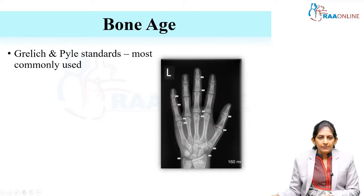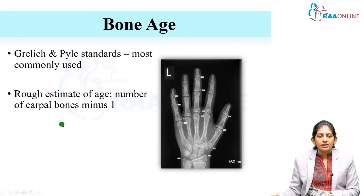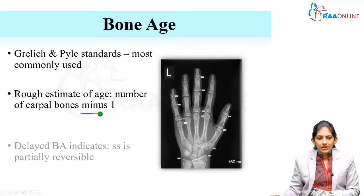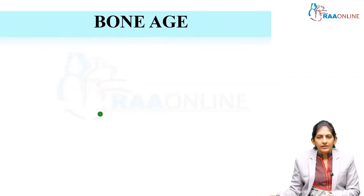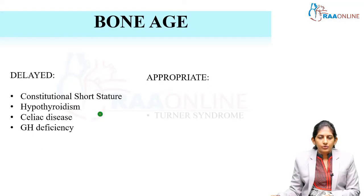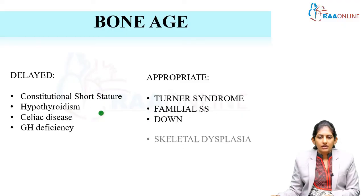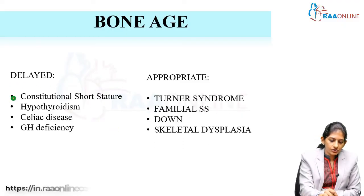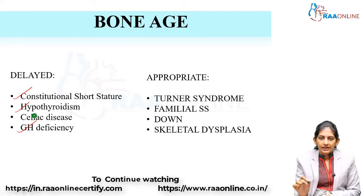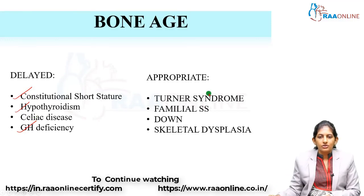The Greulich and Pyle standards are most commonly used to calculate bone age. A rough estimate of bone age can be obtained by counting the number of carpal bones minus 1. Whenever bone age is delayed, short stature can be partially reversible. Bone age is delayed in constitutional short stature, hypothyroidism, and growth hormone deficiency, but is appropriate in many syndromic short statures.